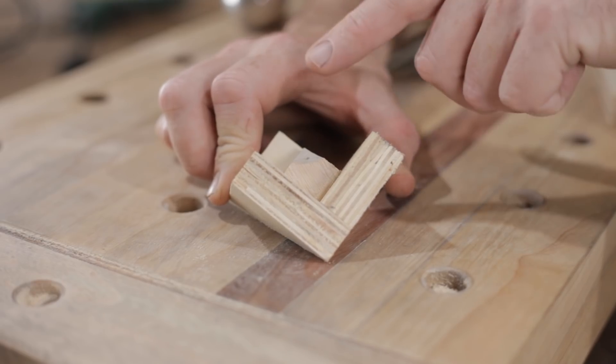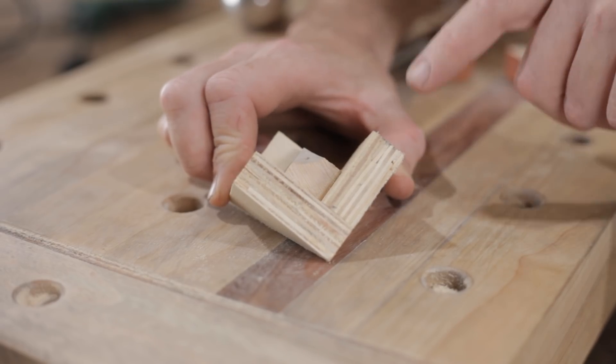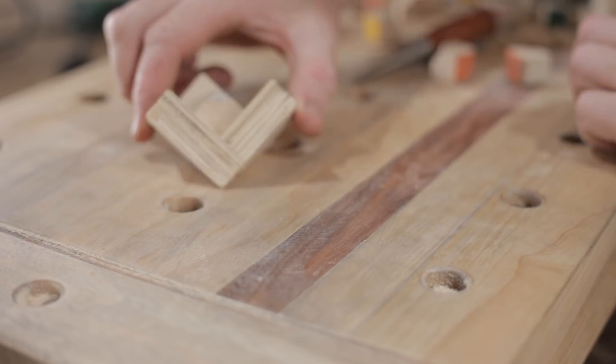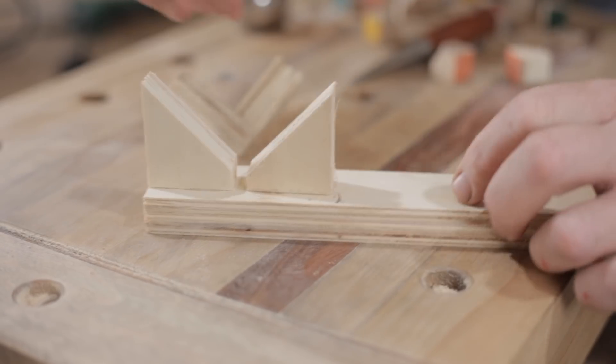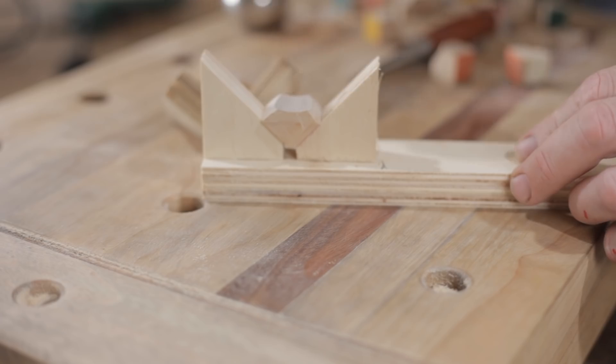I've made this simple little jig to hold the corner pieces while I drill them. It's just a few pieces of plywood hot glued together, and then I made this one here, and that's to do the edge pieces.